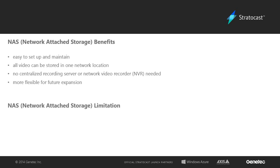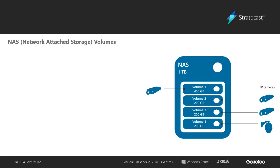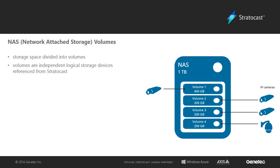Please note that each single NAS device has a limit of 16 IP video cameras that may record to it. The storage space on a NAS volume is divided up into sections or volumes, and Stratocast uses these volumes for video unit recording. A volume is considered a logical storage device that works independently of other volumes on the same NAS device. One volume can be assigned to only one IP video camera in Stratocast.